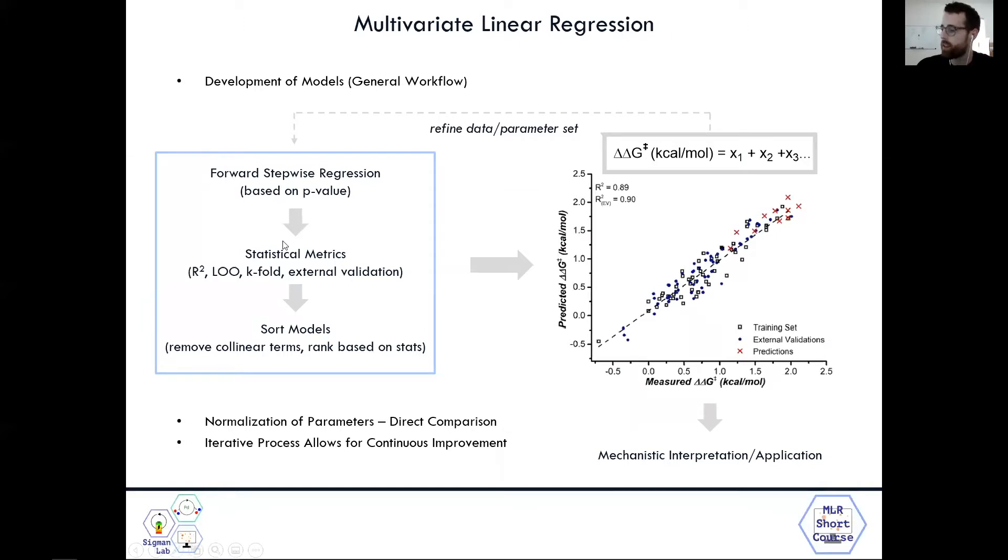Next, looking at statistical metrics, R-squared, the goodness of fit, the LLO, the leave one out, which is a cross-validation method, and then K-fold and external validation. These are just different statistical metrics we will cover in the next few slides and ones we use to compare models and really judge the robustness of our model.